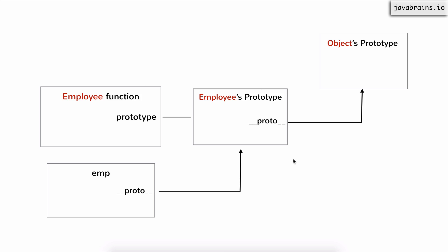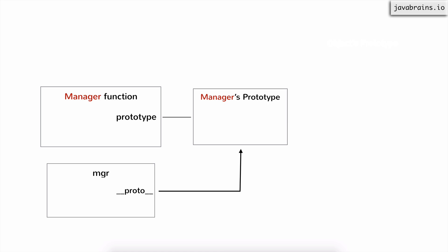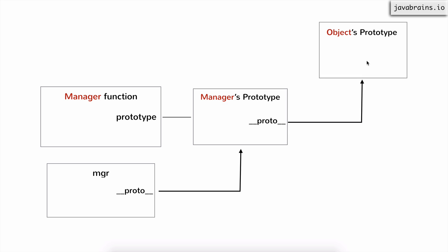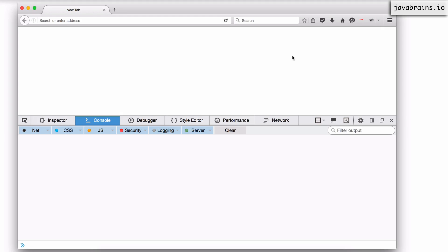How do you do this in JavaScript? This is a picture we've already seen. Let's say I create a manager function — that function is going to have a prototype, of course — and I create a manager object. This manager's prototype also has a dunder proto which points to the object's prototype. This is something that happens for every function that you create as is.